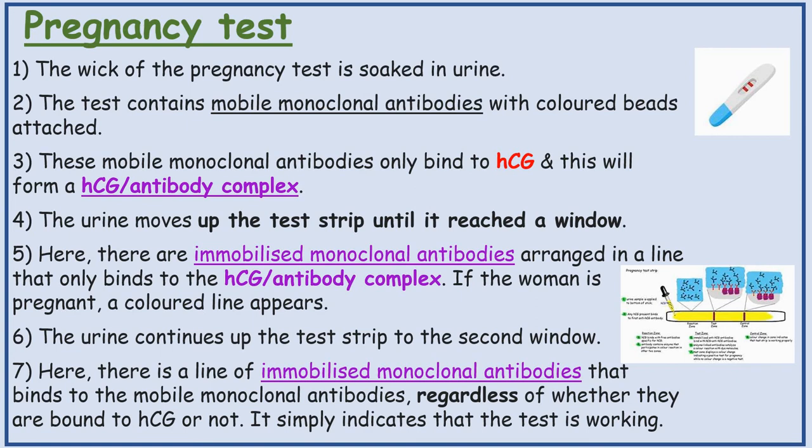If the woman is pregnant, a coloured line appears. The urine continues up the test strip to the second window, where there is a line of immobilised monoclonal antibodies that binds to the mobile monoclonal antibodies regardless of whether they are bound to HCG or not — it simply indicates that the test is working. So that's the control line.